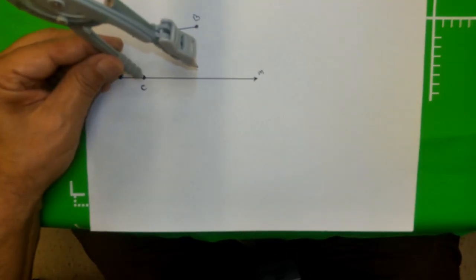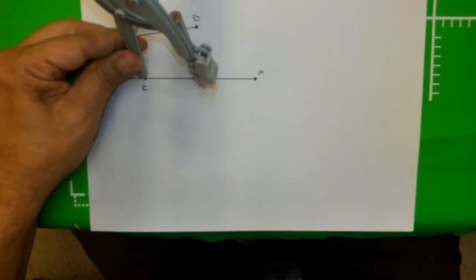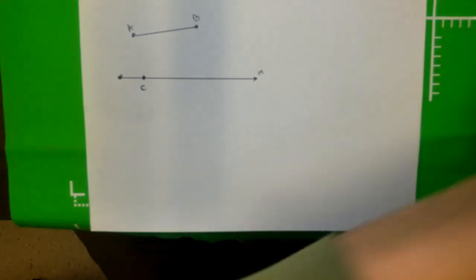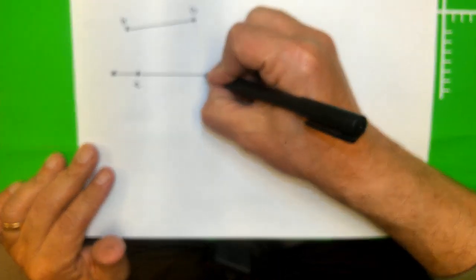And I'm going to go down here at point C and I'm going to draw a small arc, and that's it - we have this point D.